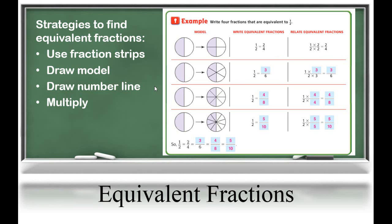However, students need to recall from their understanding of the identity property of multiplication that multiplying by one results in the same answer. So students won't be multiplying by two — they'll actually be multiplying by two-halves, or two over two, which is the fraction equal to one. So when they multiply the numerator by two and the denominator by two, they're not changing the size of the fraction, they're just changing the number of pieces.